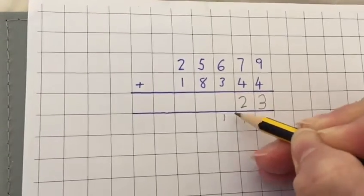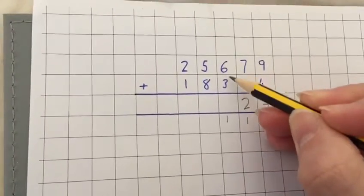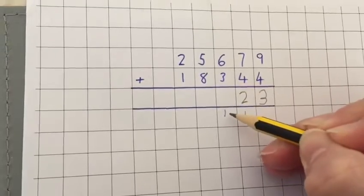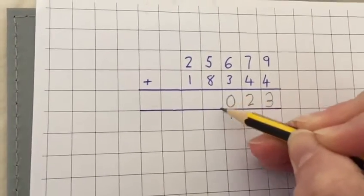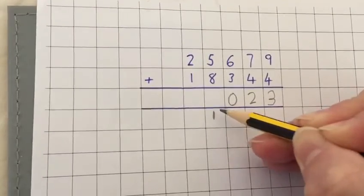So then you've got 6 plus 3 which is 9. You add 1 to it which is 10. So this time you'll put a 0 underneath your answer column and exchange into your next column.